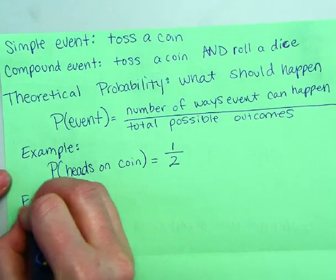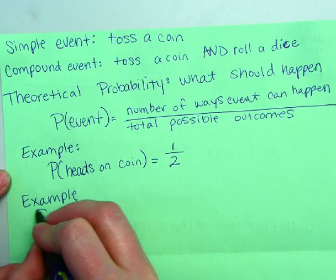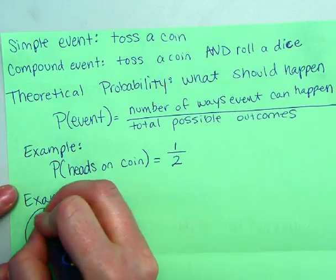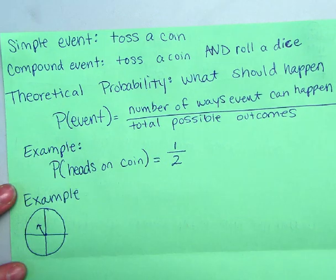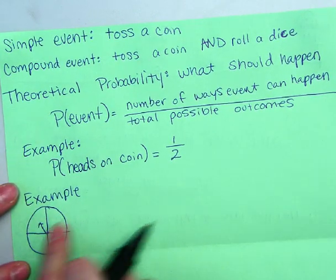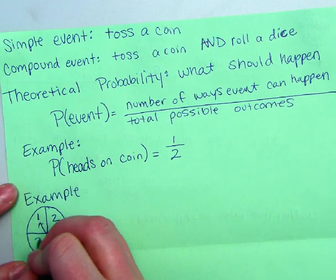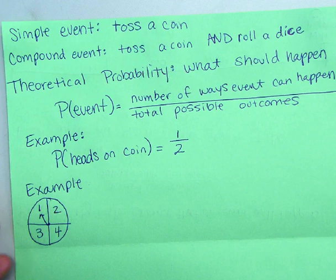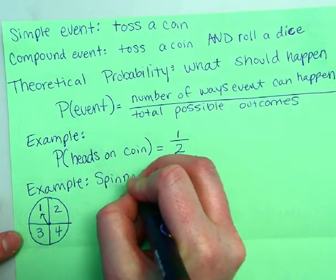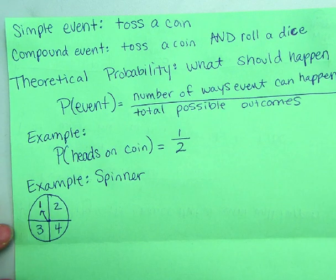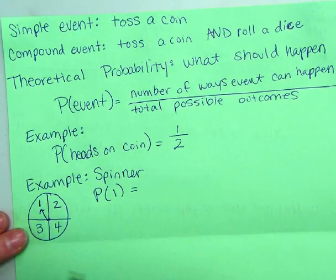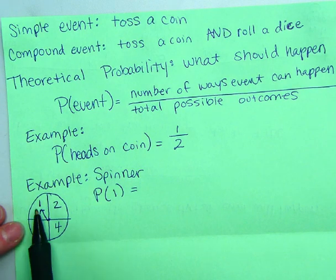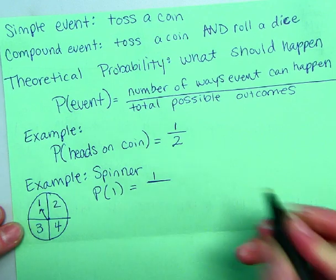Okay. Another example is whenever you have a spinner. I know y'all have seen one of these before. A spinner, you have a little arrow that's going to, you're going to flick it and it's going to spin around. So let's say probability of one, two, three, four. So there's a spinner. So let's write the different kinds of probability we have. Probability of getting a one. So how many ones are there on this spinner? There's one. How many total outcomes are there? Well, there's one, two, three, four sections.